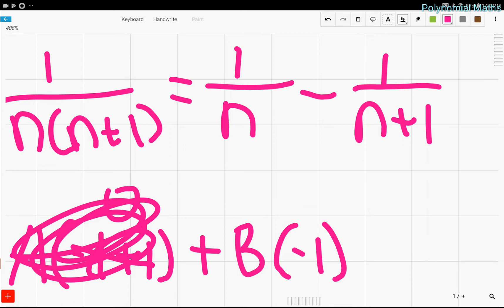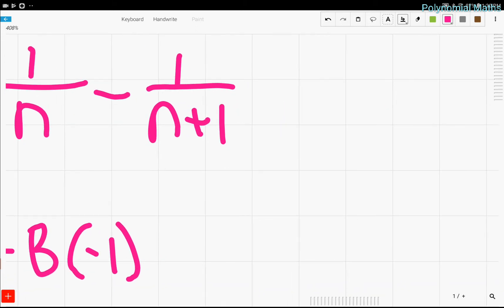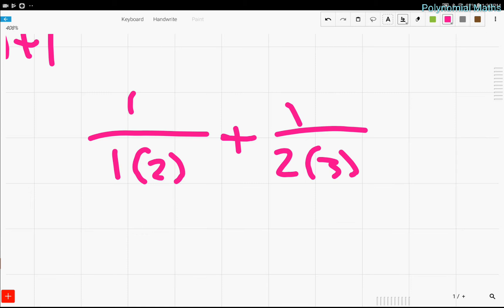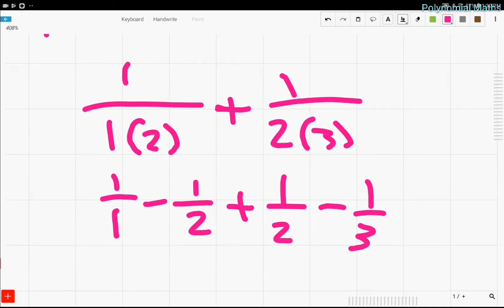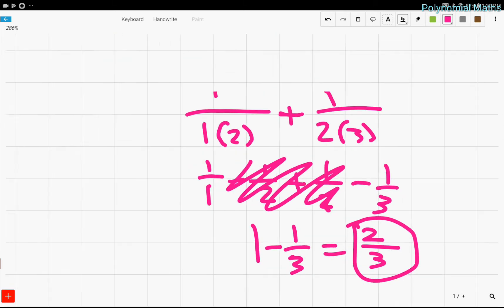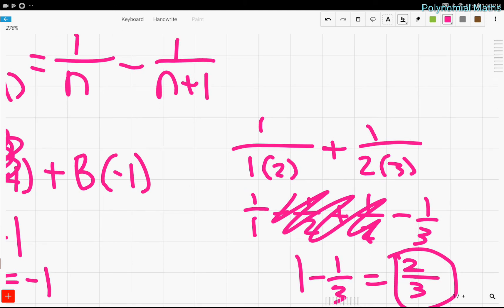Now, you can kind of see why this is extremely useful when you're solving a sum of fractions. Because let's just say we're doing something like 1 over 1 times 2 plus 1 over 2 times 3, and we want to solve that. Well, we don't have to do much because if we use our new formula we just found earlier, it's just 1 minus 1 half plus 1 half minus 1 third. And then 1 half terms just cancel out, and we're left with 1 minus 1 third, which is equal to 2 over 3. And that is our solution for that. So, you can kind of see how this is useful because you can use partial fraction decomposition to cancel out a lot of terms.